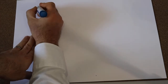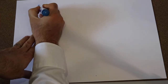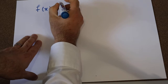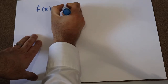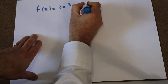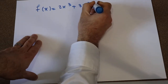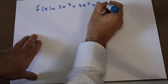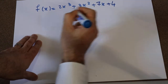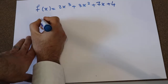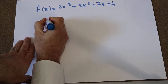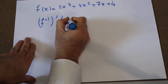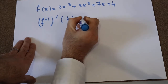Hello. Let's define function f(x) as 2x³ plus 3x² plus 7x plus 4. The question is to calculate the derivative of the inverse of this function at 4.